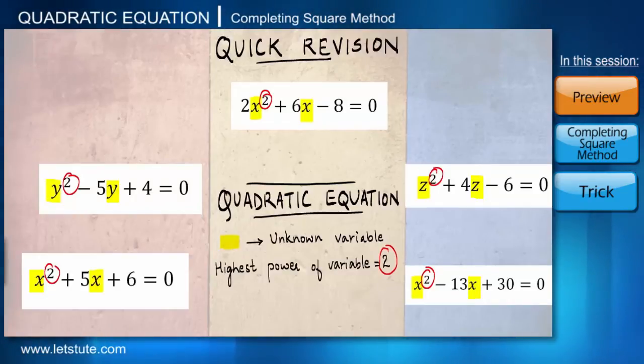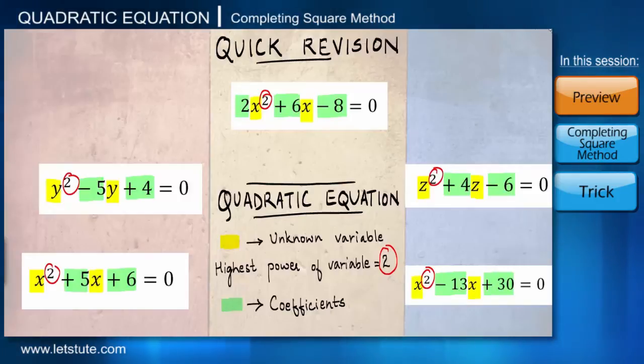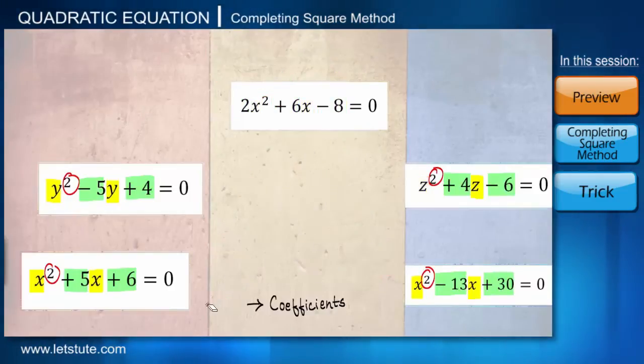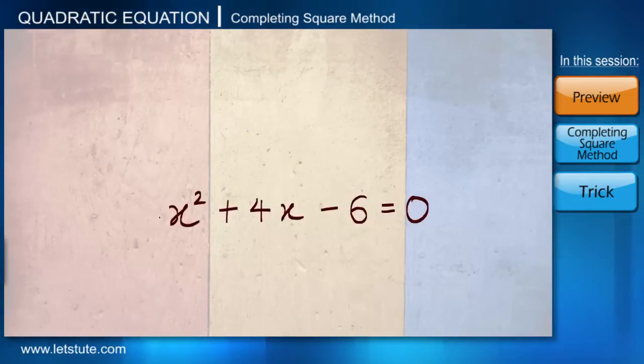Also, these variables may or may not be accompanied by numbers before them, which are called coefficients. We can denote these coefficients by the letters a, b, and c. So generally, a quadratic equation can be represented as ax² + bx + c = 0. So let me take one such quadratic equation: x² + 4x - 6 = 0.